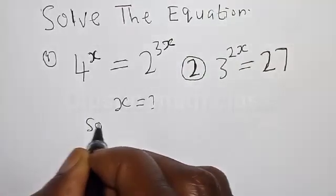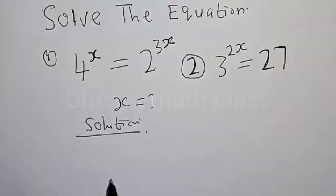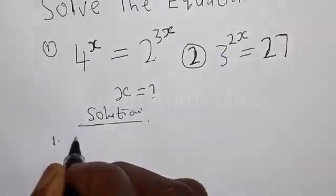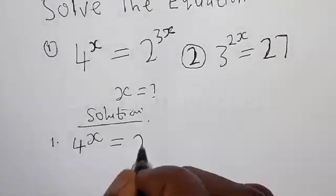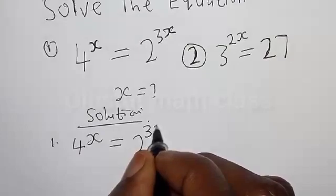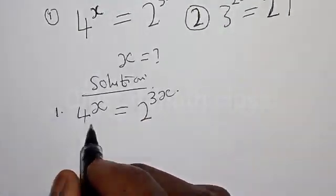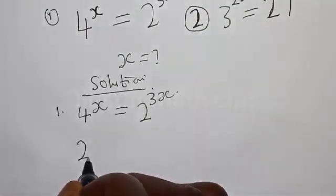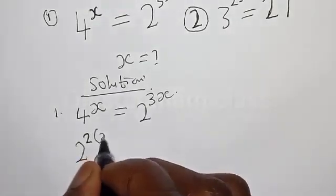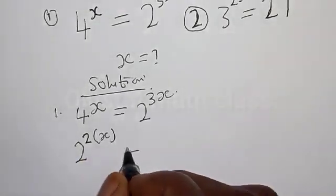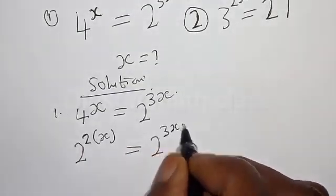Solution. We have the first equation: 4 raised to power s is equal to 2 raised to power 3s. Then, 4 raised to power s can be expressed as 2 raised to power 2, into s, which is equal to 2 raised to power 3s.